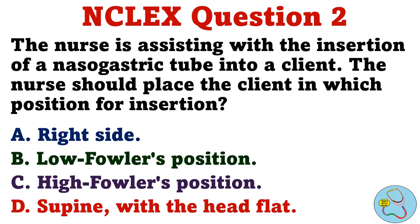Question 2. The nurse is assisting with the insertion of a nasogastric tube into a client. The nurse should place the client in which position for insertion? A. Right side. B. Low Fowler's position. C. High Fowler's position. D. Supine with the head flat.